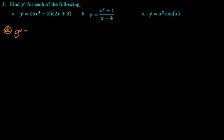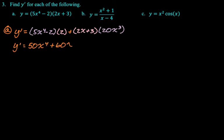So for a, y prime is, we're going to do first times derivative of the second, which is 2, plus second which is 2x plus 3, times derivative of the first which is 20x cubed. And then, I don't know, simplify I guess. There's really not much simplifying you can do here. I did it and I got 50x to the fourth plus 60x cubed minus 4. I don't remember if I checked that on a calculator. So hopefully that's right.